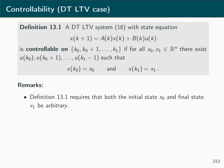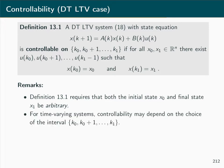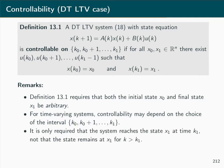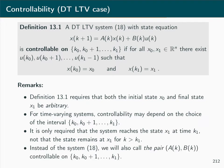Note that definition 13.1 requires that both the initial state and the final state be arbitrary. For a time varying system, controllability may depend on the choice of the interval from k0 to k1. For a time invariant system, it just depends on the length of this interval but not the starting time. Also, the definition only requires that the system reaches x1 at time k1, but not that the state remains at x1 beyond k1. We will also simply call the pair (A, B) controllable on a given time interval.